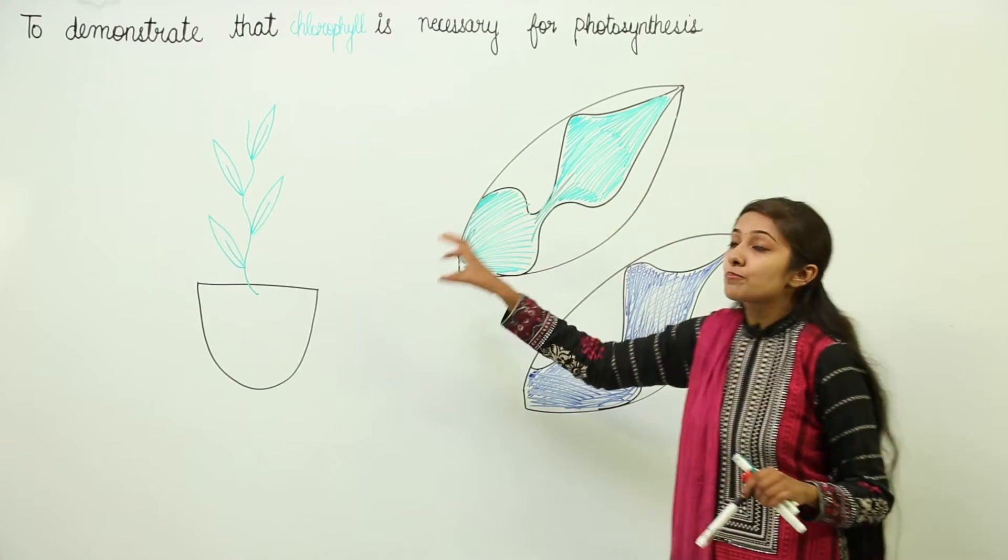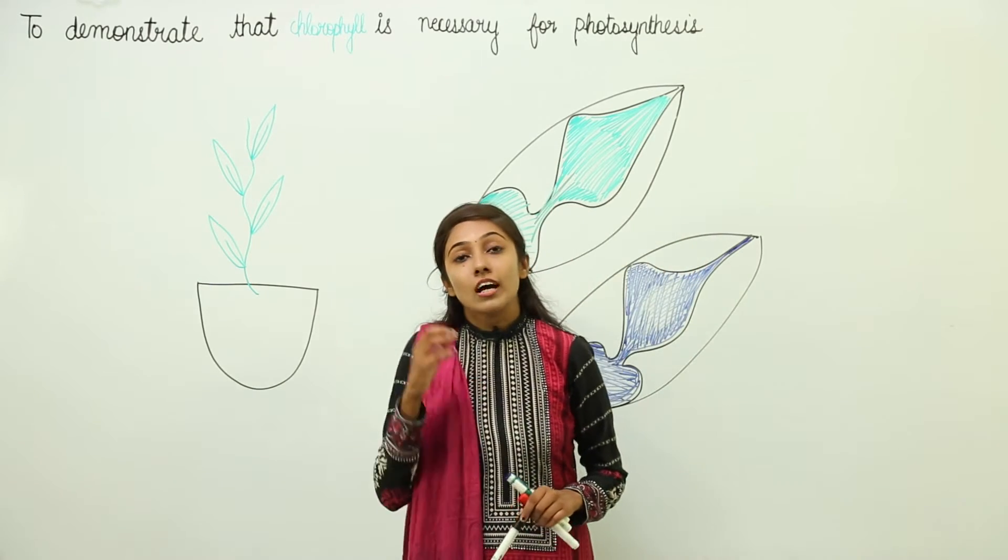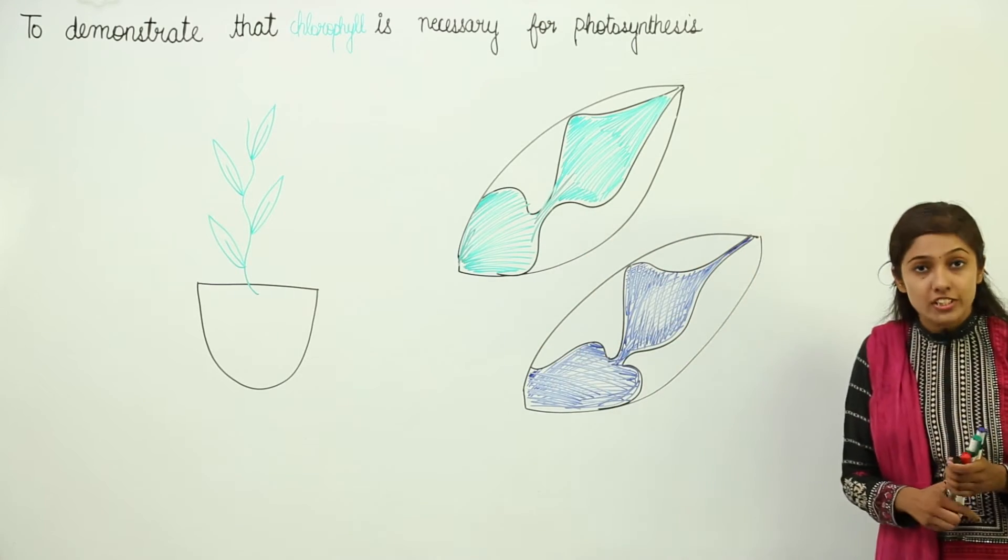We are going to destarch this potted plant by keeping it in the dark for about 48 hours. After 48 hours, we perform a starch test.